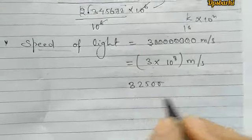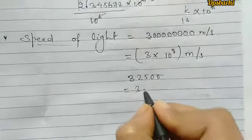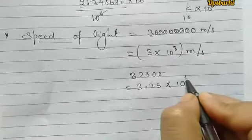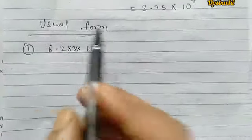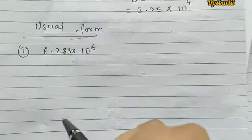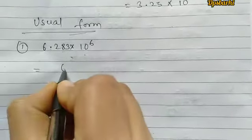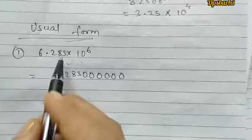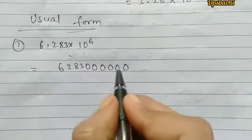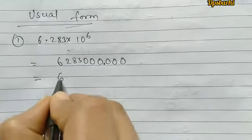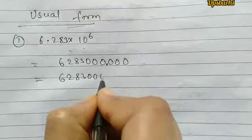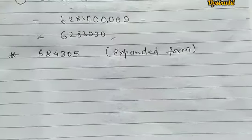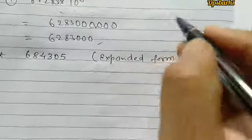For the number 32,500, we write it as 3.25 × 10 to the power 4. Next is the expanded form. You can write a number in expanded form using powers of 10.